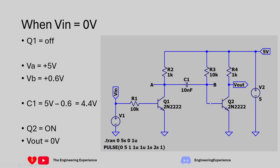Since the base of Q2 is at 0.6–0.7 volts, Q2 is in saturation — switched on — so the collector-emitter path acts like a very small resistor. This means Vout is pulled close to ground through R4. To summarize: when VIN = 0, Q2 is saturated and on, Q1 is off, and the capacitor voltage is 4.4 volts with positive on the A side and 0.6 volts on the B side.